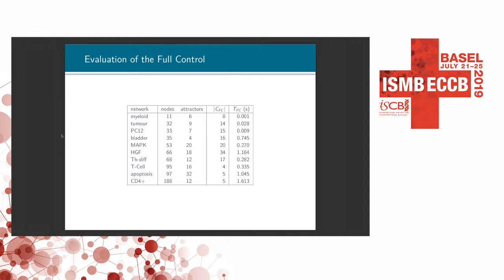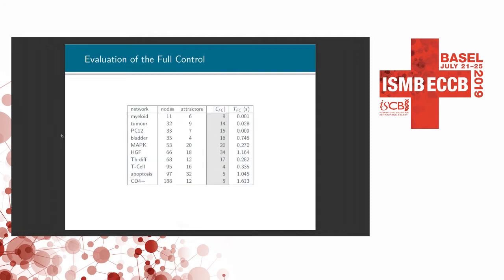These are the results of the full control on the same networks. Since there is no method in the literature dealing with the exact same problem, we did not do a comparison. The column shows the number of perturbations required by full control — compared to target control, full control needs more nodes, but compared to the size of the network, the number of perturbations is still relatively small, and computation is very efficient.